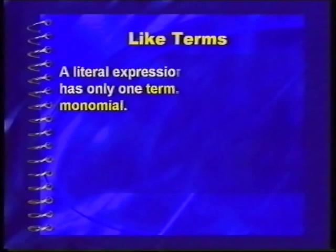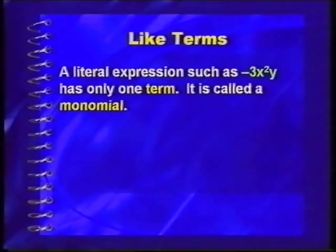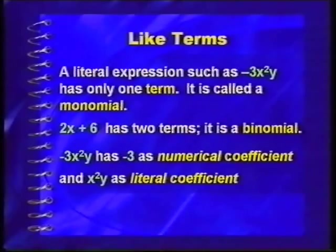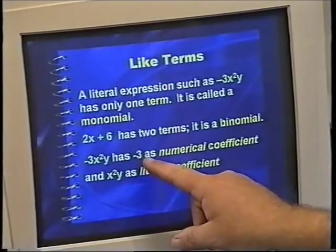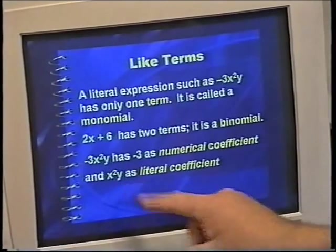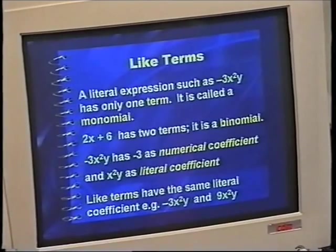The next topic is simplifying expressions. Before we can do that, we need to know the terminology. A literal expression such as negative 3x squared y has one term — it's called a monomial. If it's got two terms, it's called a binomial. An expression like negative 3x squared y has two parts: a numerical coefficient, that negative 3, and a literal coefficient. As soon as the literal coefficient is the same in two expressions, you can talk about like terms. Only like terms can be added or subtracted — that is the golden rule of algebra.